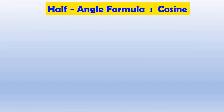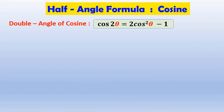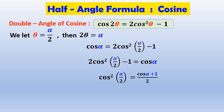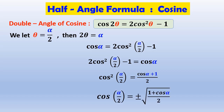To derive the half-angle formulas for cosine, we use a similar process with the same substitution of theta equal to alpha over 2, so 2 theta equals alpha. We substitute into the cosine of a double-angle and obtain cosine of alpha equal to 2 cosine squared of alpha over 2 minus 1. We then reverse the equation, add 1 to both sides, and divide by 2. Solving for cosine of alpha over 2, we obtain the half-angle formula for cosine.